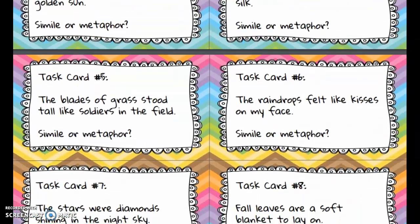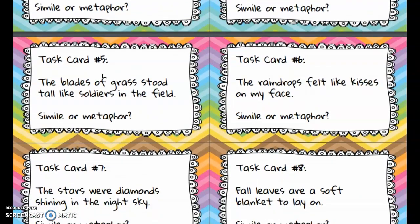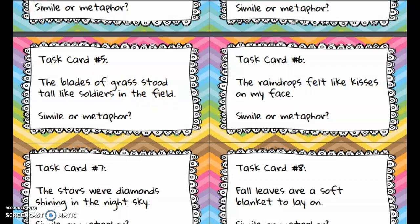Let's look at one more together. Number five: the blades of grass stood tall like soldiers in the field. Here we are comparing the grass to soldiers, and the author wants you to know that the grass was extremely tall.